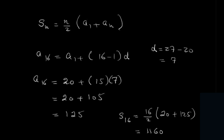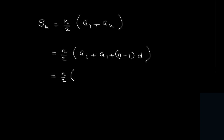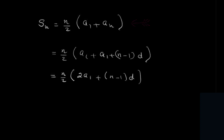There's another formula for the sum using the first term, common difference, and number of terms. If we replace an by a1 plus (n minus 1)d in the formula, we get Sn equals n over 2 into 2a1 plus (n minus 1) times d. We can memorize both formulas: use the first when a1 and an are given; use the second when a1 is not given but the common difference is given.